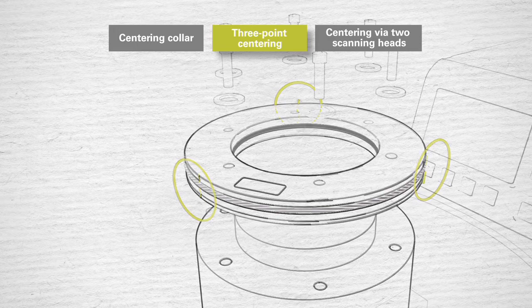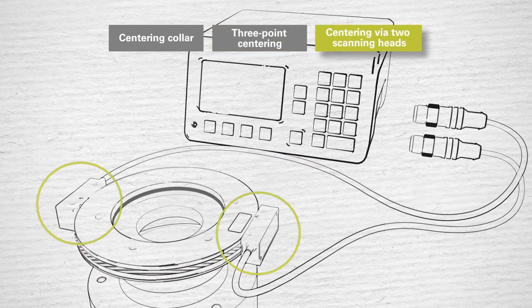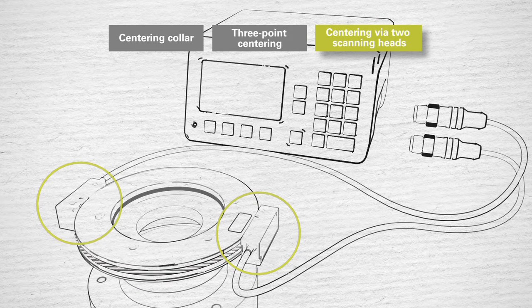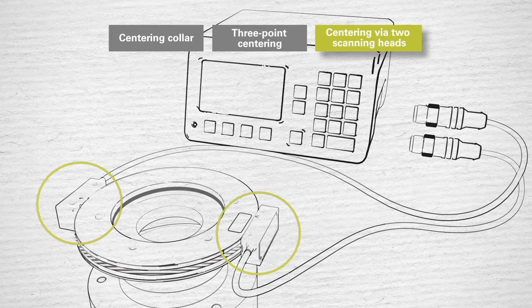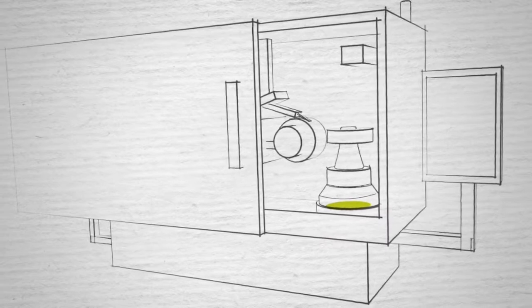But the most accurate centering method uses two scanning heads and works on all Heidenhain angle encoders. The actual angular position is used, so no mechanical interfaces are needed. And that's how you create the ideal conditions for the high accuracy of your rotary axis.